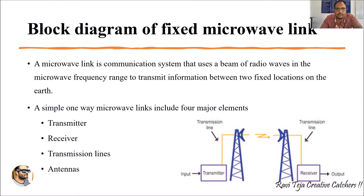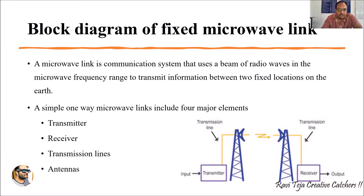We are using microwave frequency range signals in order to transmit data or information — in other words, to communicate between a transmitter unit and a receiver unit. A simple one-way microwave link includes four major elements: the transmitter, the receiver, the transmission lines, and the antennas.